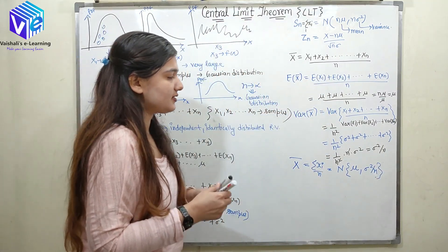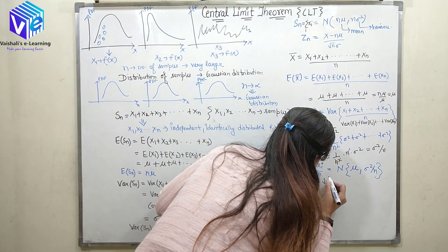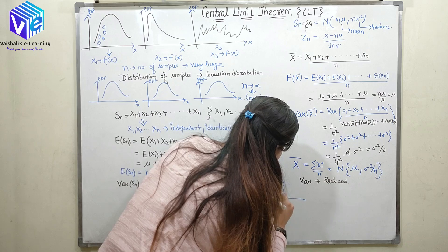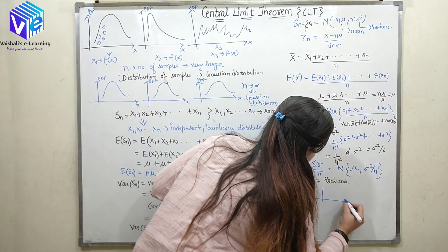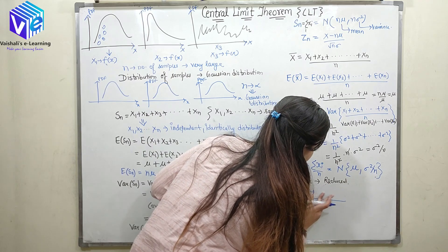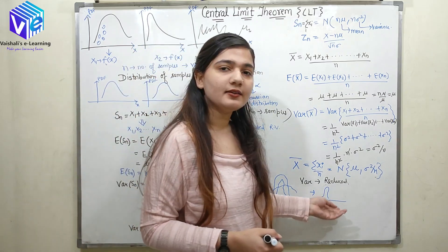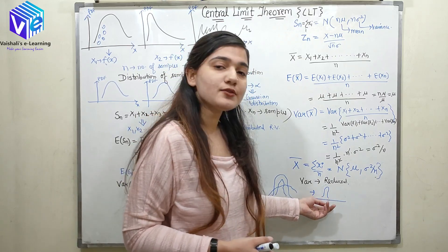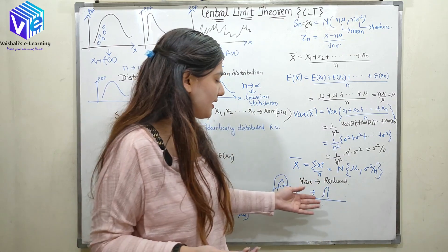Here you can see the variance has reduced. When I take a lot of samples and add them all, the variance would reduce. If I have a wider variance initially, after applying the central limit theorem the variance would be less. So when taking a large number of samples, the distribution follows a perfectly Gaussian with reduced variance.